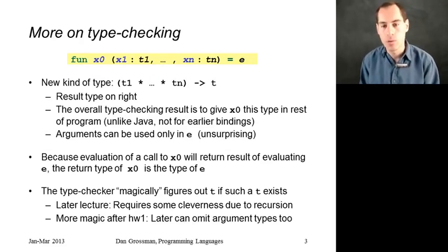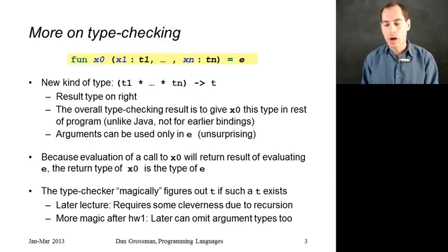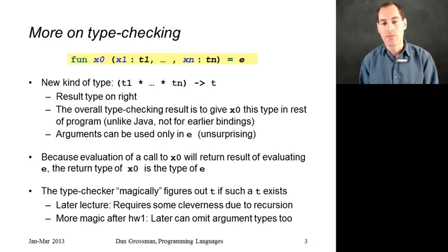Let's go into more detail on the type checking. We have this new kind of type: t1 star for all the arguments, then the arrow and the t. The overall type checking result is to give x0 this type. Those arguments, x1 and x2, those variable names, are not added to the static environment after this binding. They're only in the static environment for the body of the function. That's how methods work in Java or functions in Python - those arguments are only in scope for e, not for the code after this function definition.